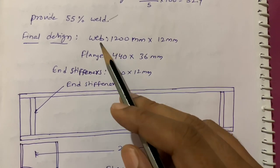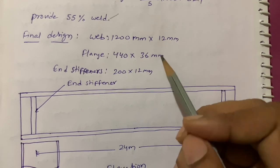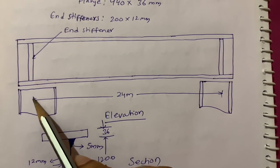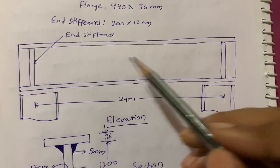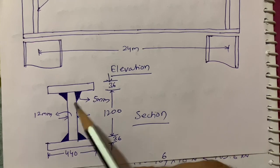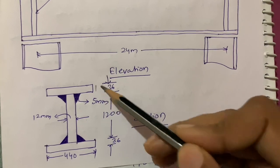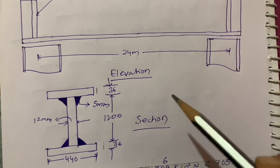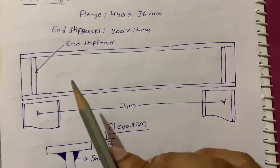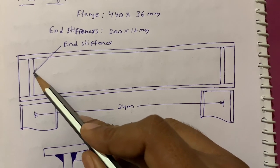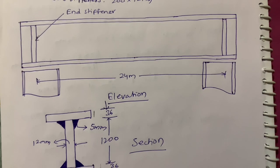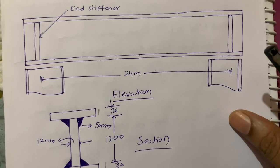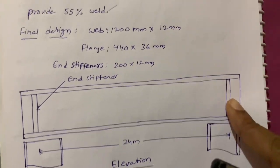The final plate girder design summary: Web — 1200 mm × 12 mm; Flanges — 440 mm × 36 mm; End stiffeners — 200 mm × 12 mm flats. The elevation shows a 24-metre span with end stiffeners at both ends, web depth 1200 mm, flange thickness 36 mm, flange width 440 mm, web thickness 12 mm, with weld connections shown. These plate girders are used mainly in heavy bridges. The next video will cover plate girder design using intermediate stiffeners.